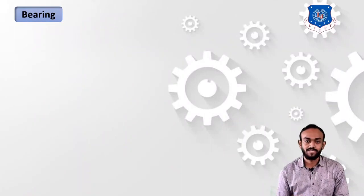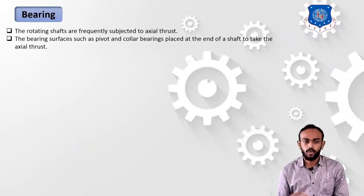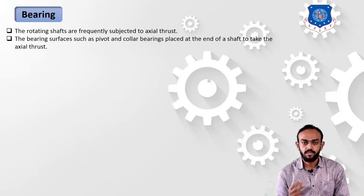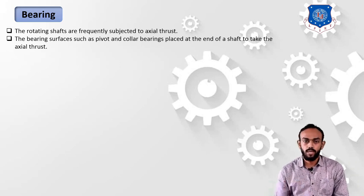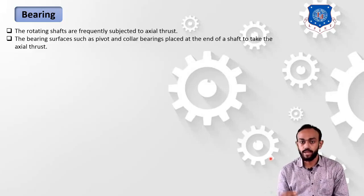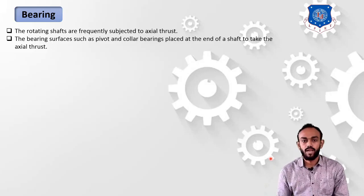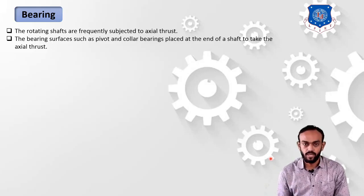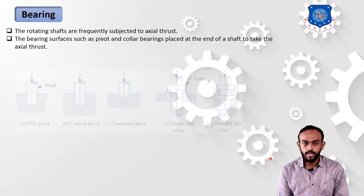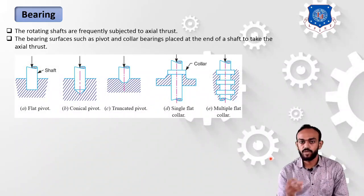First of all we are going to understand what is a bearing. A bearing is a supportive element for all the rotary elements like a shaft which is rotating in our machine. Rotating shafts are frequently subjected to axial thrust and also radial load. That's why we need to use these types of bearings which can support the rotary element when it is rotating at a very high velocity and under loading.